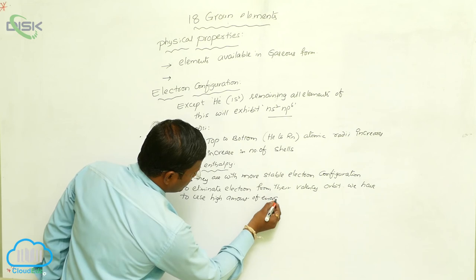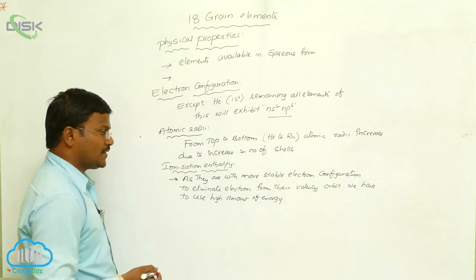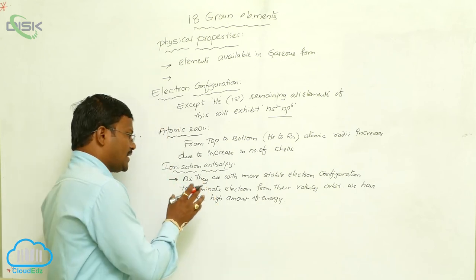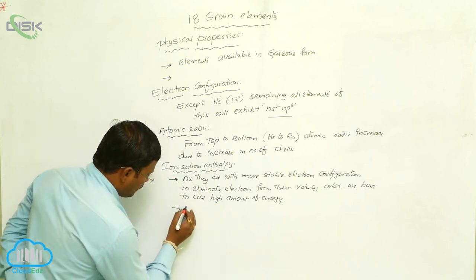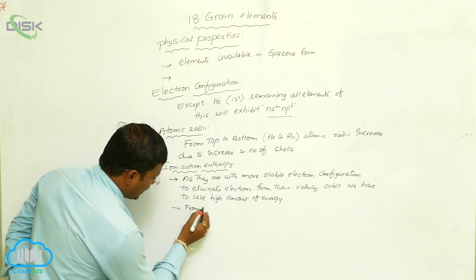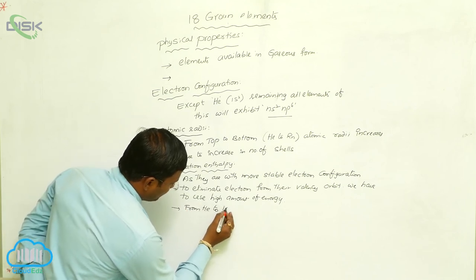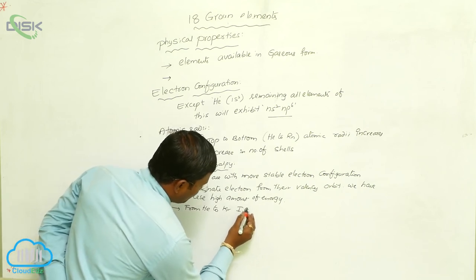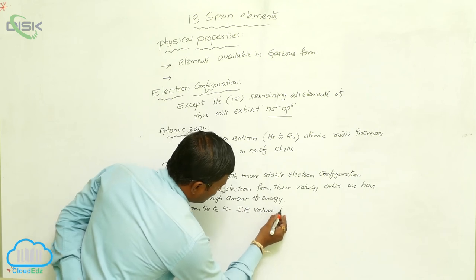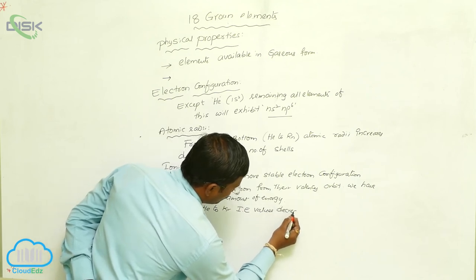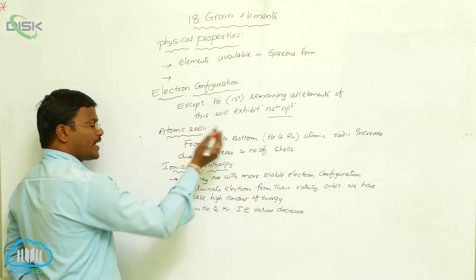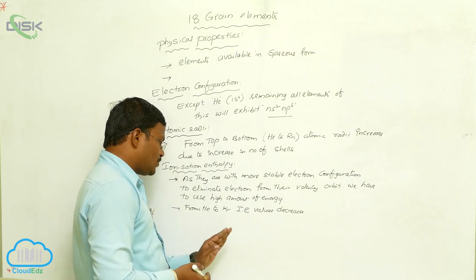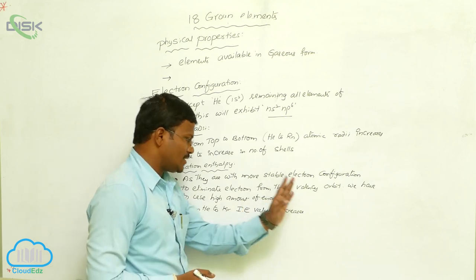A high amount of ionization enthalpy is required to eliminate electrons from these inert gases. From Helium to Krypton, ionization enthalpy values decrease due to the increase in atomic radii. So, as atomic radii increases from Helium to Krypton, ionization enthalpy values decrease.